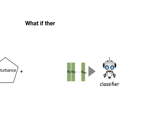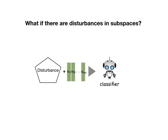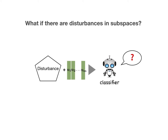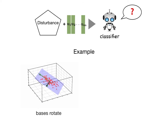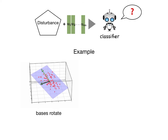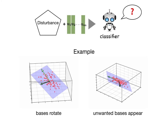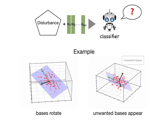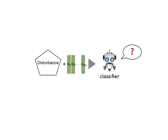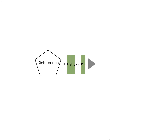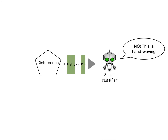However, what if there are some disturbances in subspaces? Can classifiers still make the correct prediction? Here is an example of disturbances. First, the subspace would rotate when there is noise in the data. Second, unwanted bases will appear when noise components are strengthened. Disturbances will cause the classifier to make wrong predictions, so a smart classifier should be able to recognize the disturbed subspaces.